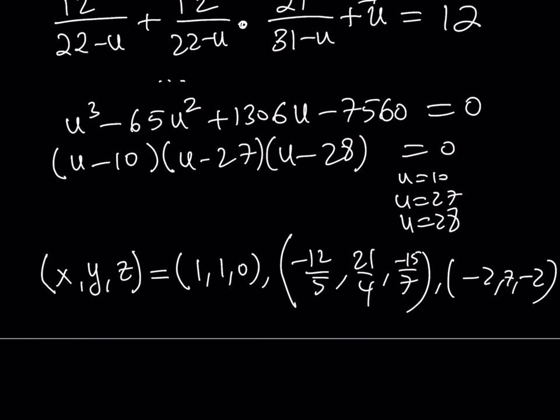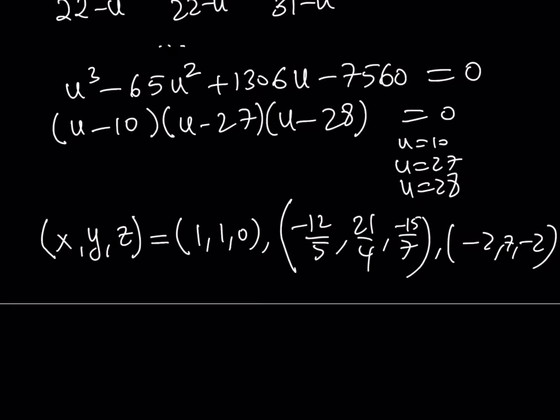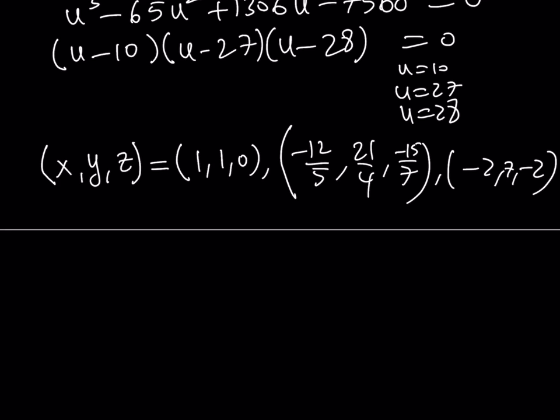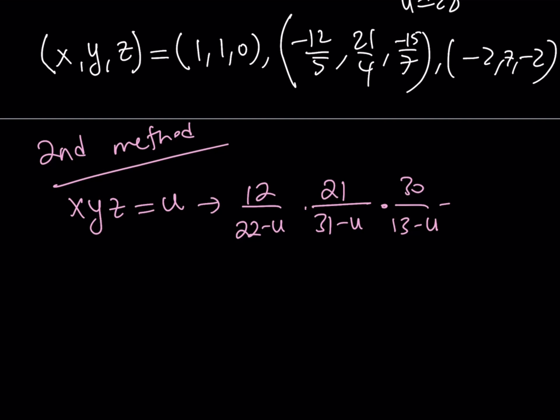Now let's talk about the second method. The second method is kind of picking up where we left when we started going over the replacements here. We use the first equation. But we could also do something differently. The second method is basically using the fact that xyz is equal to u. So the product of all these things is equal to u. So I can just replace x with 12 over 22 minus u, y with 21 over 31 minus u, and z with 30 over 13 minus u, and that is equal to u.